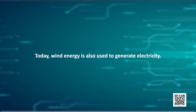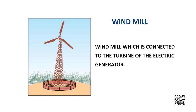The rotatory motion of a windmill is utilized to lift water from a well. Today, wind energy is also used to generate electricity. A windmill consists of a structure similar to a large electric fan, which is erected at some height on a rigid support. To generate electricity, the rotatory motion of the windmill is used to turn the turbine of an electric generator.